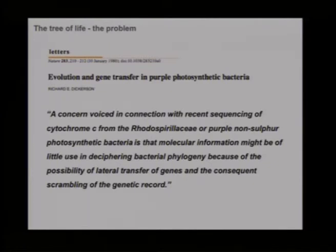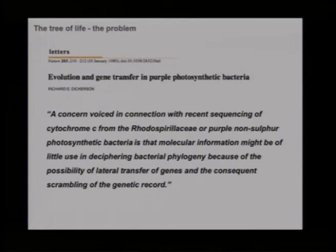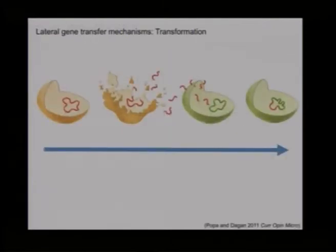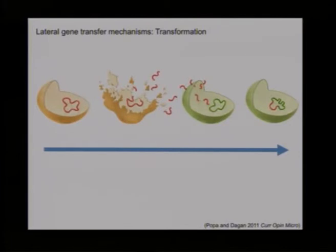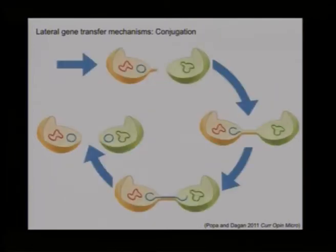Before going into solutions, I will explain the main mechanisms for gene transfer in nature. We have three main mechanisms: transformation, conjugation, and transduction. Transformation is the uptake of naked or raw DNA from the environment into the recipient cell. Prokaryotes can import this DNA and incorporate it into the chromosome. The gene transfer can also be more intentional — this is conjugation.